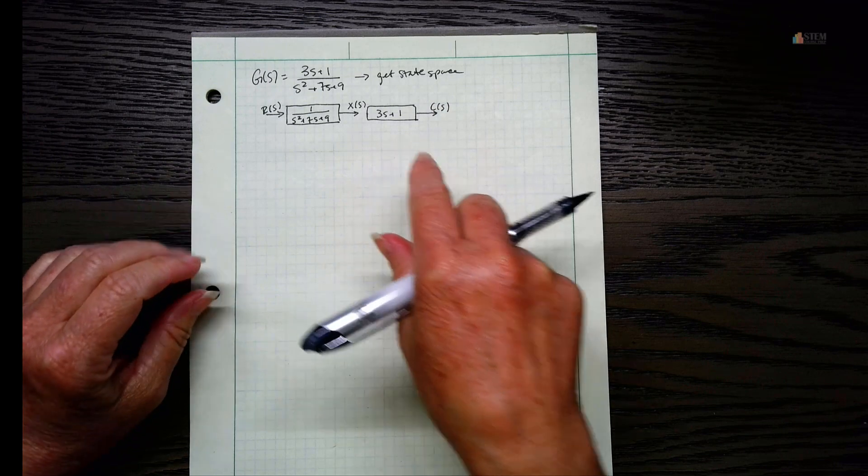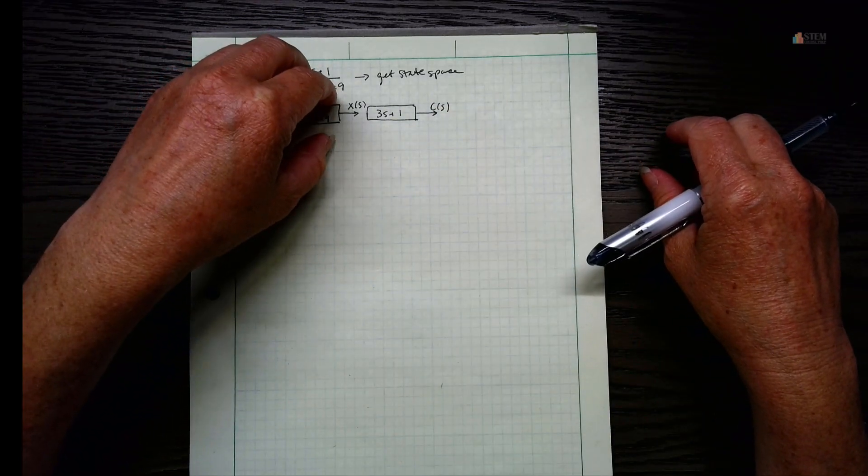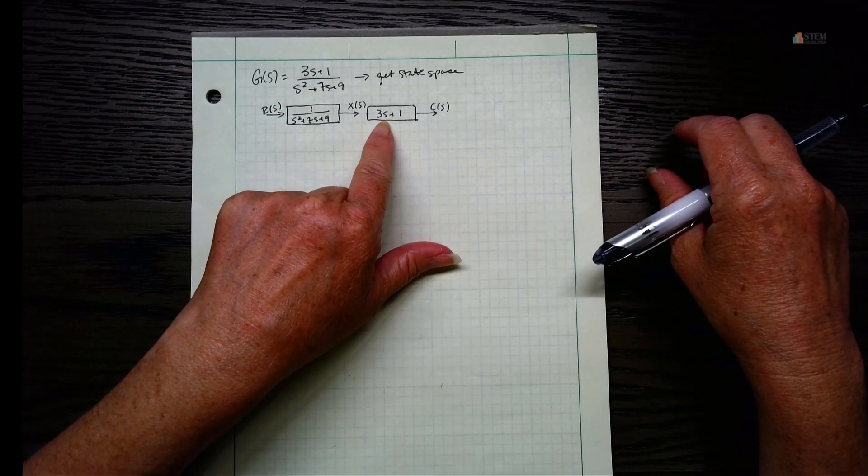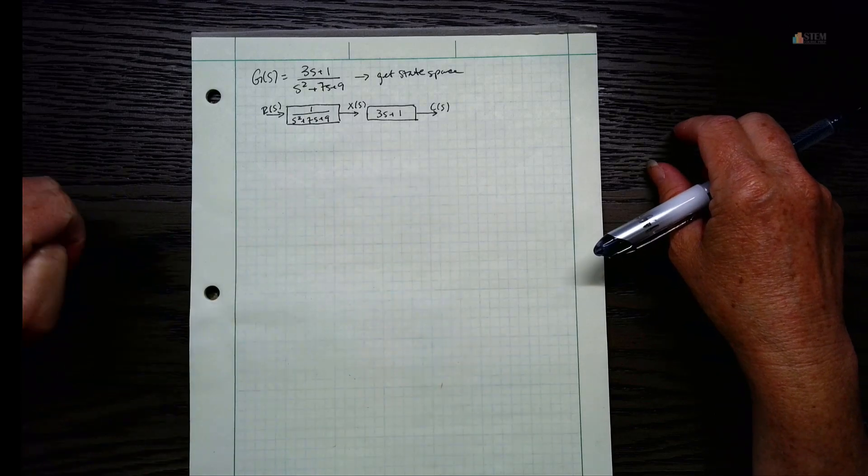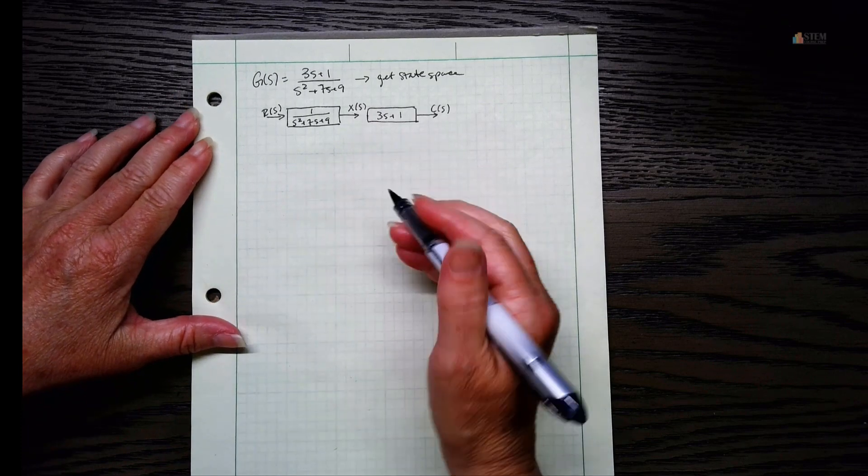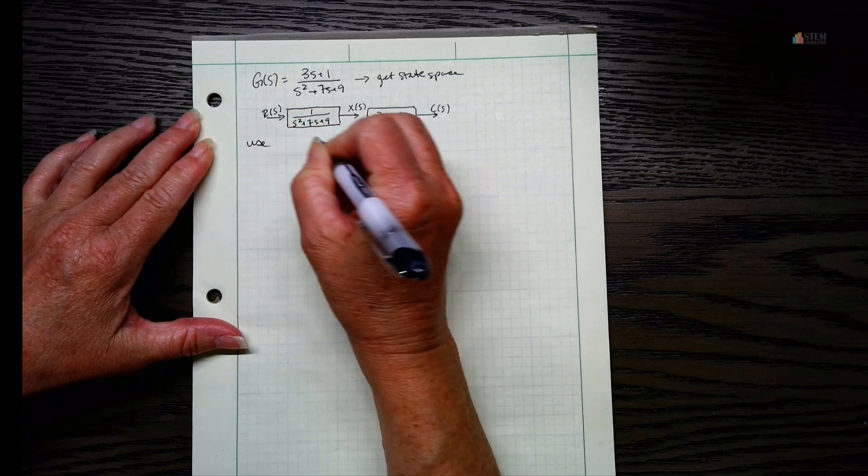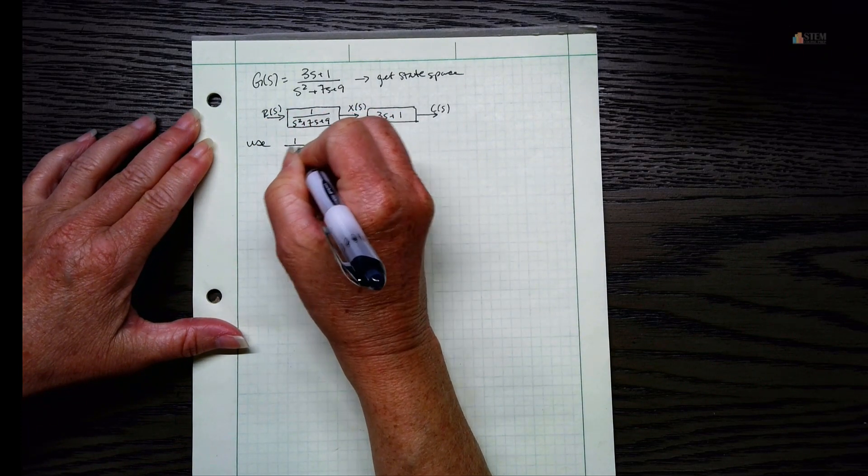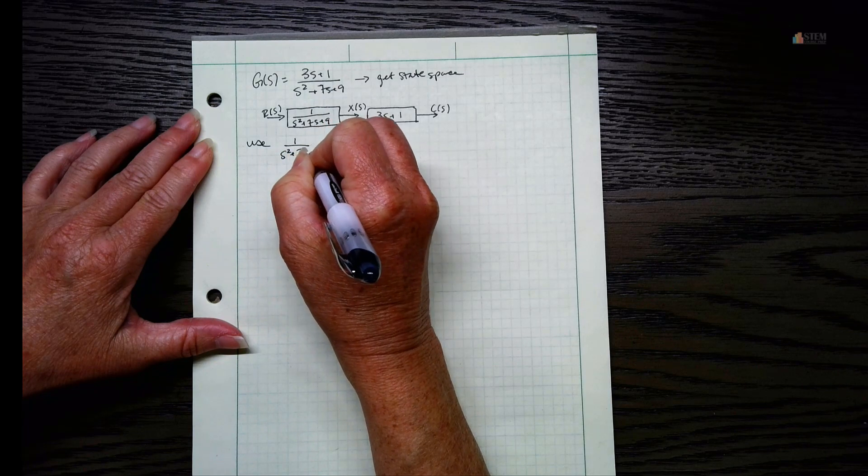We're going to do it in two parts. We're going to find the information we need for this part, and then we're going to look at this part here. So let's start with this initial part here using the one over S squared plus seven S plus nine.